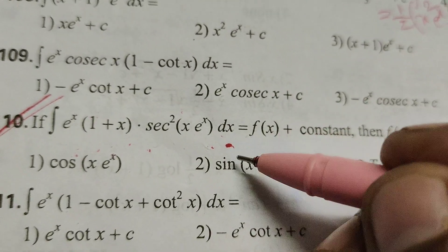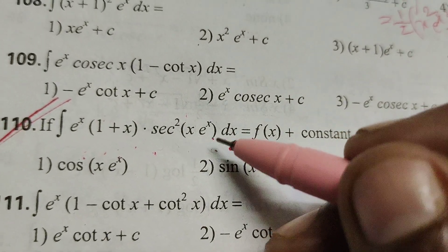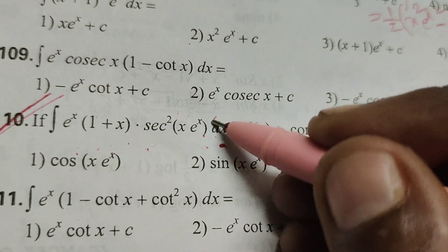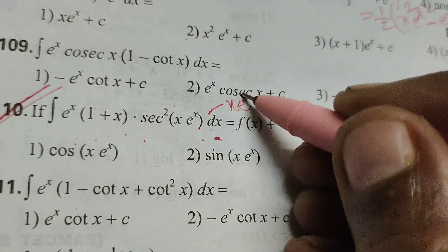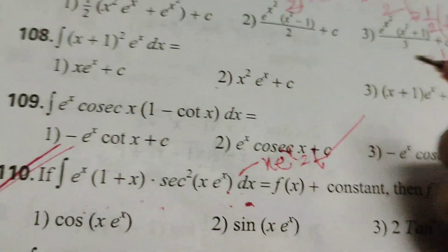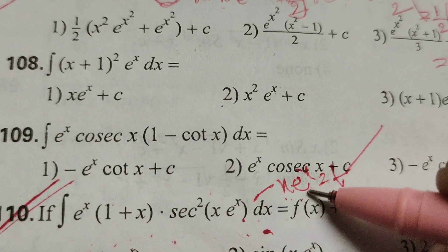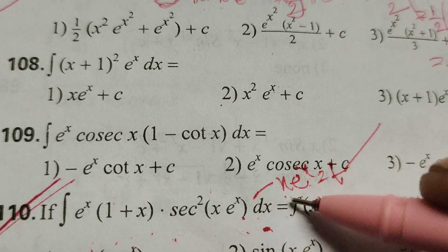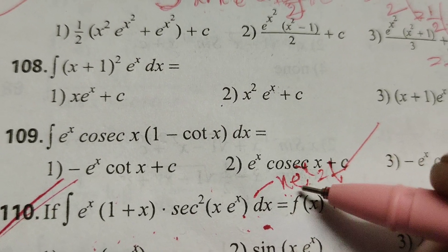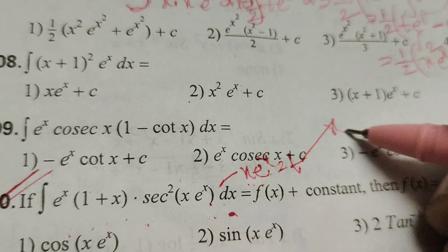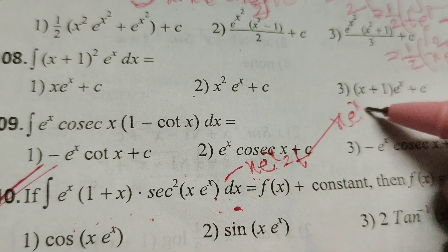Here using substitution method, put xe^x equals to t. Now differentiate this xe^x using differentiation of uv formula: u times v dash plus v times u dash. x into differentiation of e^x is e^x, plus e^x into differentiation of x is 1.